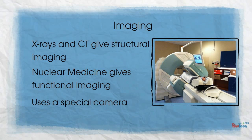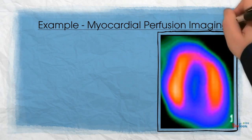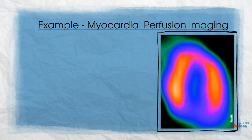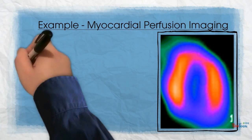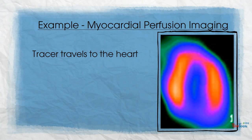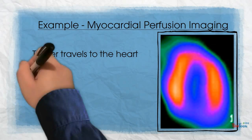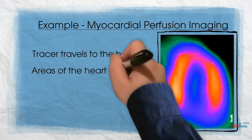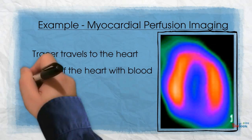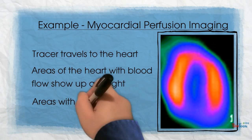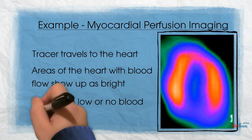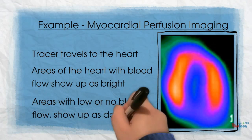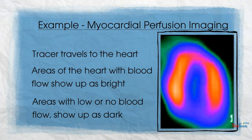Let's look at an example of an imaging test. A myocardial perfusion scan is a scan that visualises the blood flow to the heart. The tracer goes to the heart and is absorbed by the healthy heart tissue, but not by unhealthy heart tissue. This allows us to see what areas of the heart are receiving blood and what areas are blocked, providing useful information that can be used by doctors.